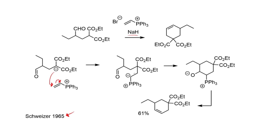Phosphorus can stabilize the anion at the alpha position, and so after the Michael addition we have set up an ylide, which looks like a traditional reagent for a Wittig reaction. Indeed, it intercepts the aldehyde in an intramolecular fashion, and then the rest of the reaction essentially looks like a Wittig-type process. The betaine decomposes, and we get formation of the double bond and the cyclohexene ring in fairly reasonable yield.